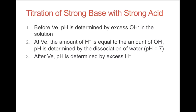For titrations of strong base with strong acid: before the equivalence volume, pH is determined by the excess OH⁻. At the equivalence volume, H⁺ equals OH⁻, so pH is determined by the autoionization of water — ideally pH 7, assuming pure water. However, the pH of water is almost never exactly 7, so be careful. After the equivalence volume, pH is determined by excess H⁺.